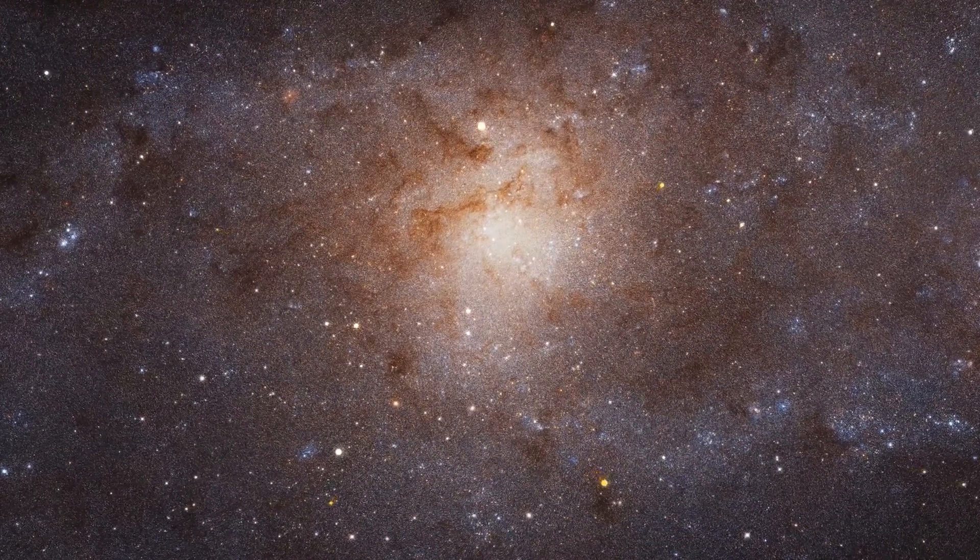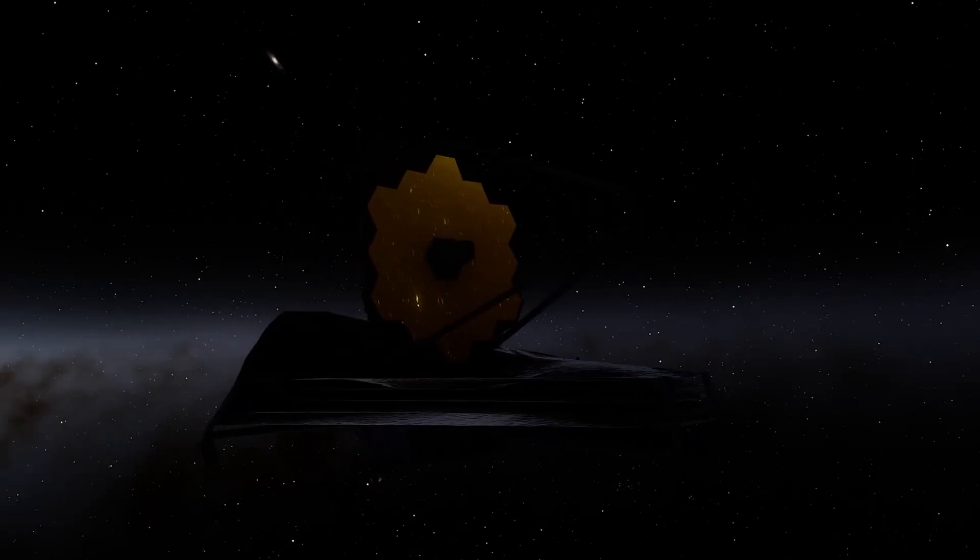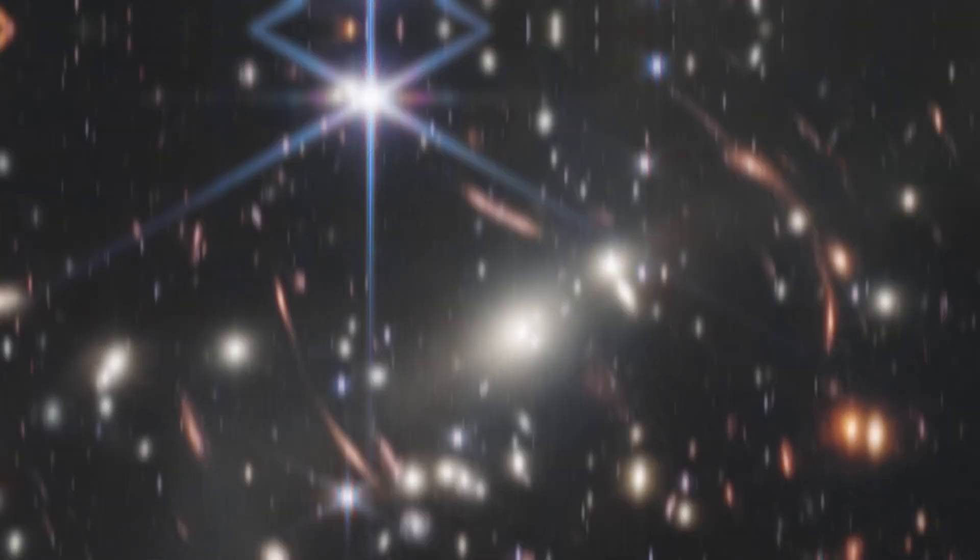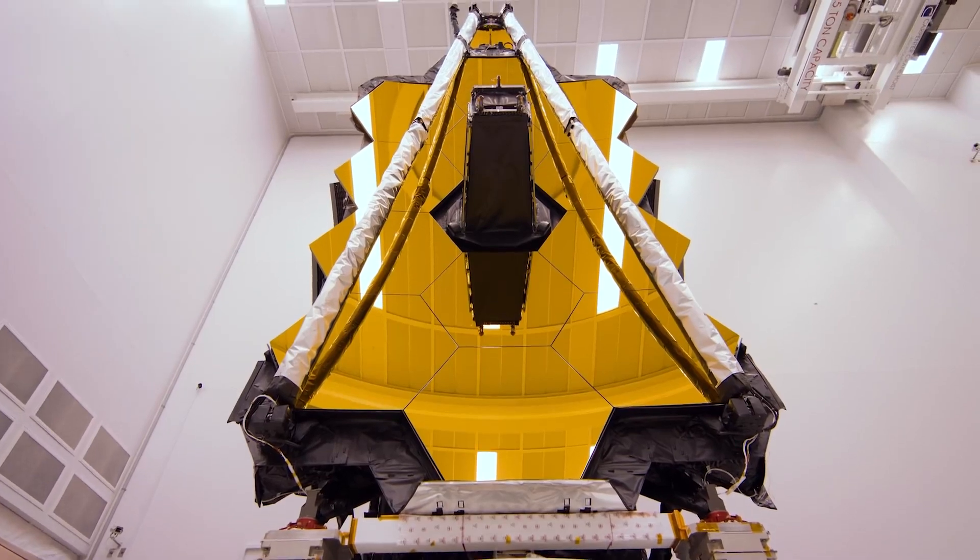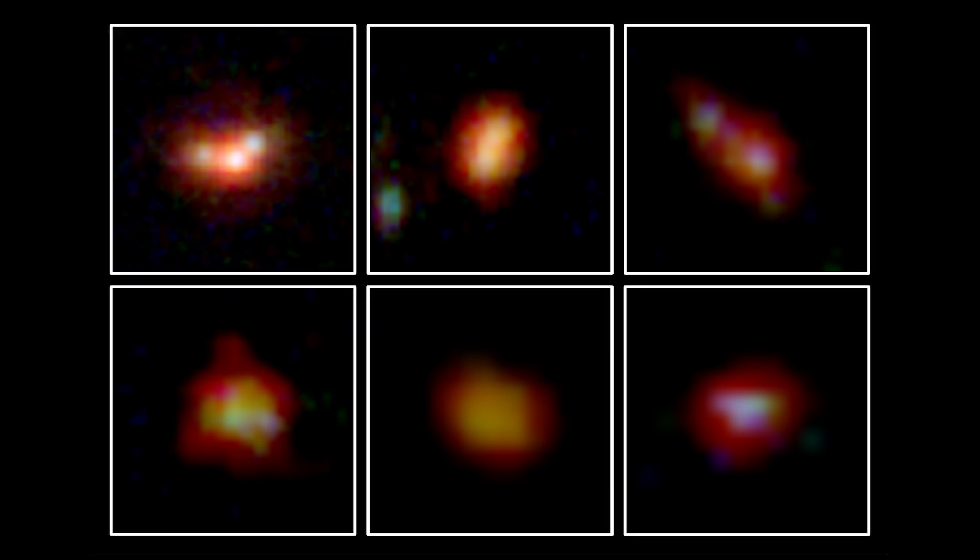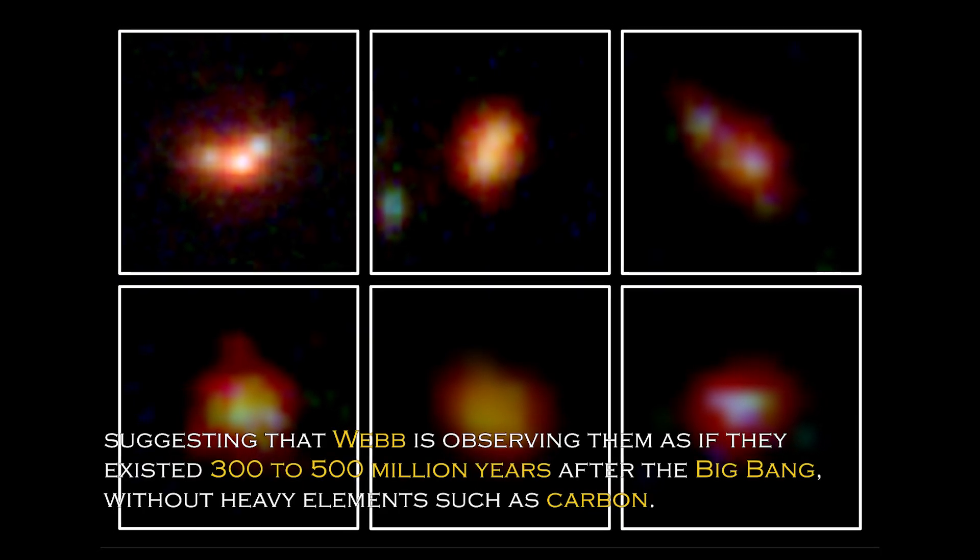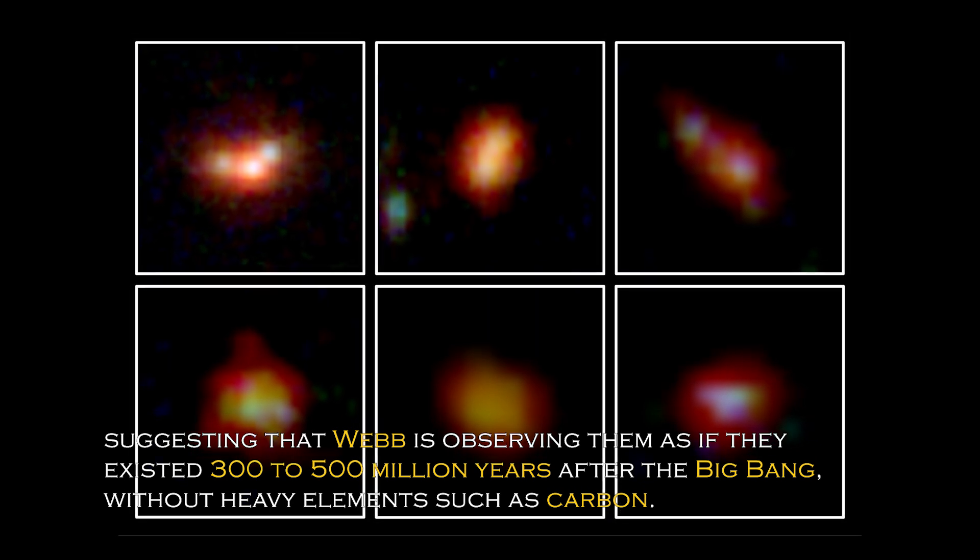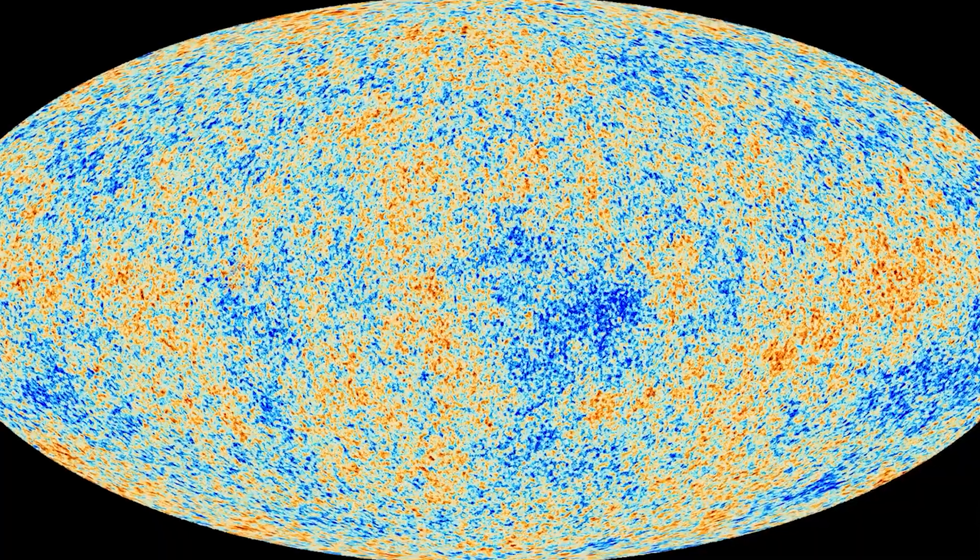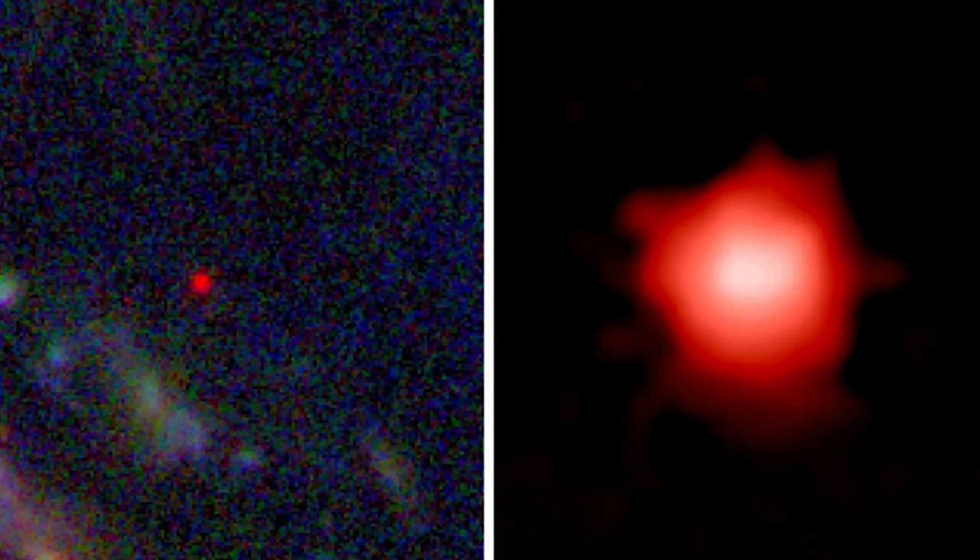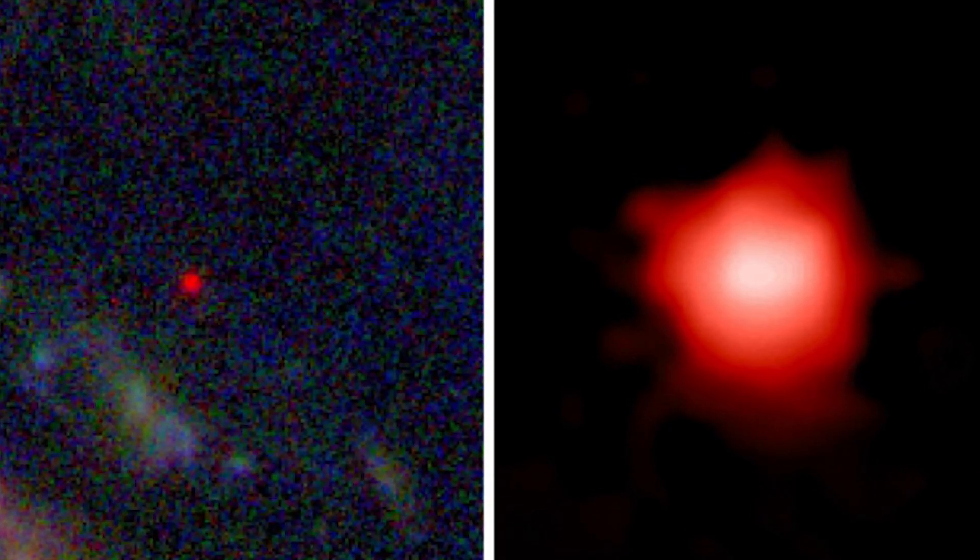The discovery has had a major impact on our understanding of the universe and has prompted NASA to develop even more powerful telescopes than the James Webb Space Telescope to confirm whether our understanding of the Big Bang is correct. Data obtained from Webb's spectrometer and near-infrared camera have revealed that four of the six primordial galaxies have extreme redshifts, suggesting that Webb is observing them as if they existed 300 to 500 million years after the Big Bang, without heavy elements such as carbon. This is surprising since the universe is estimated to be 13.8 billion years old, and the existence of these galaxies suggests that we need to revise our understanding of the early universe.